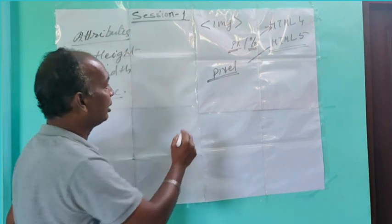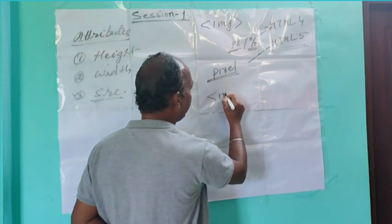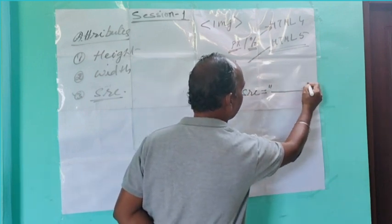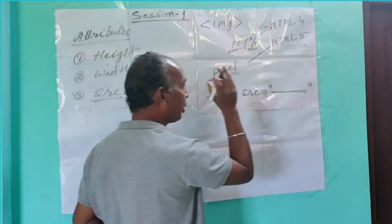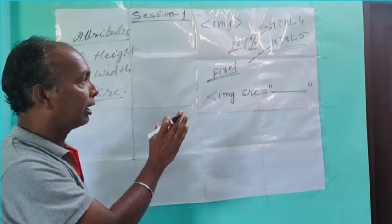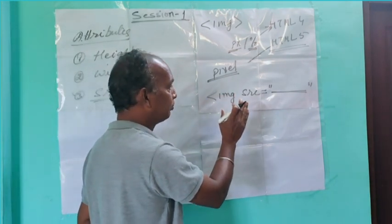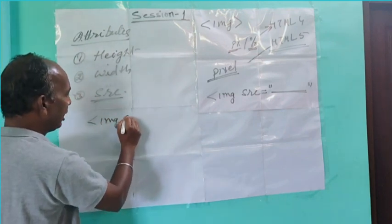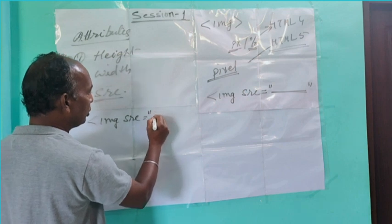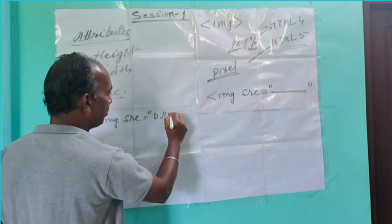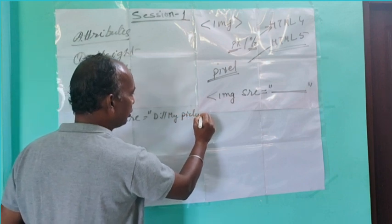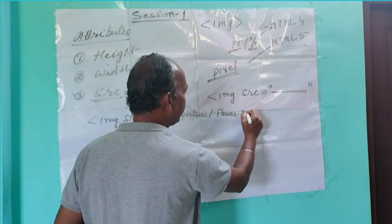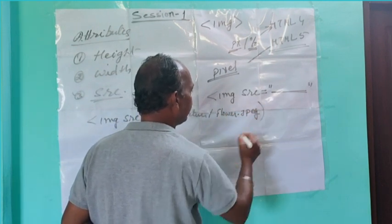Here is how we use it: we write IMG SRC equals to the file path. For example, if you have an image file on D drive, you write: img src="D:/my pictures/flower.jpg" or flower.jpeg.